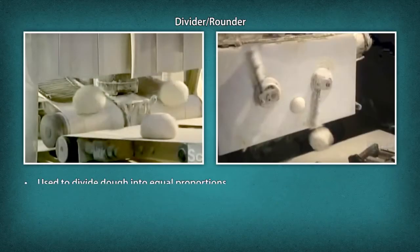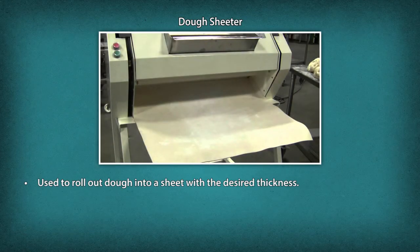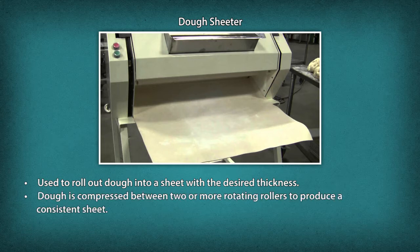Divider and Rounder: used to divide dough into equal proportions. This motor-driven machine is usually used for bread dough. Dough Sheeter: used to roll out dough into a consistent sheet with the desired thickness. Dough is compressed between two or more rotating rollers to produce a consistent sheet. This equipment is used especially for pastries and biscuits.